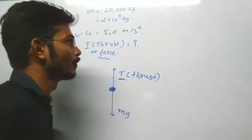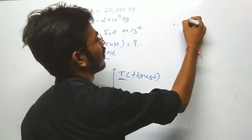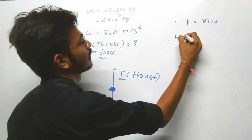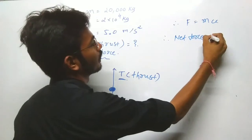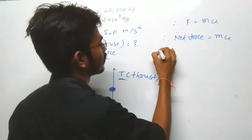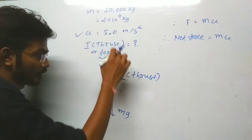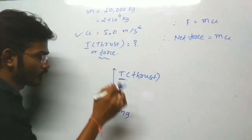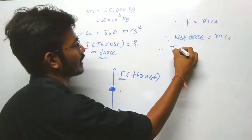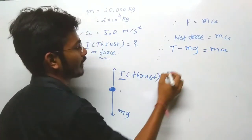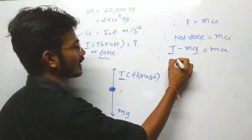Now, according to the second law of motion, F = ma. That means the net force equals ma. So for net force, we have to find T, that means thrust.